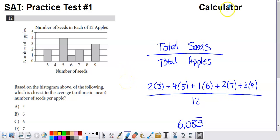Here's a practice SAT question that involves the use of a calculator. Looking at what we're presented with here, we've got this bar graph. The y-axis shows the number of apples, and the x-axis shows the number of seeds.